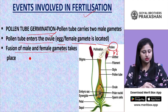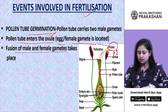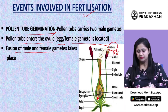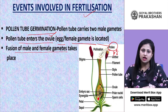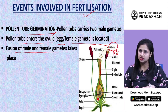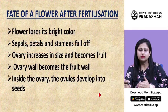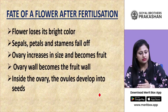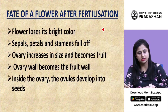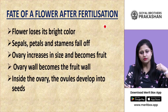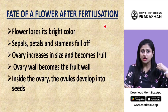Fusion of male and female gametes: the two male gametes fuse with the female gametophyte, and this is how the process of fertilization occurs. Once fertilization occurs, many changes take place in the plant body.